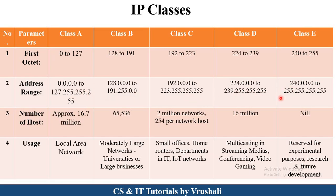According to the range, all classes are divided. Approximately 16.7 million devices use Class A addresses in a local area network; this class is generally used for small-scale purposes. Now, 65,536 devices use Class B addresses, which are generally used in moderately large networks like universities and large business offices. The most popular and most usable is Class C network — there are almost 2 million networks, with 254 hosts per network. Class C is generally used in small offices, home routers, different departments, IT industry, and IoT networks.